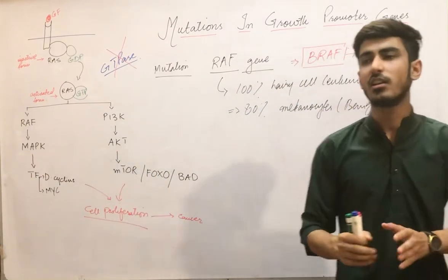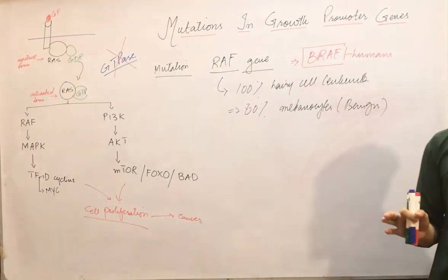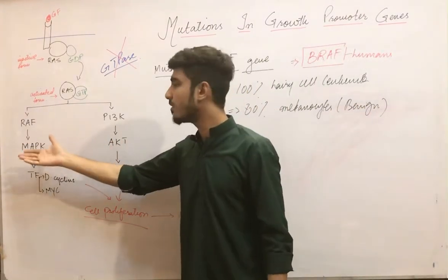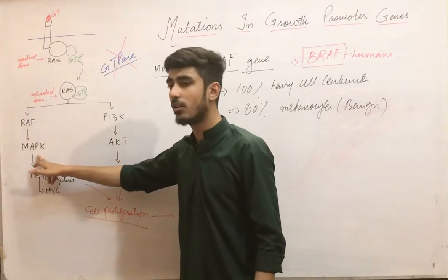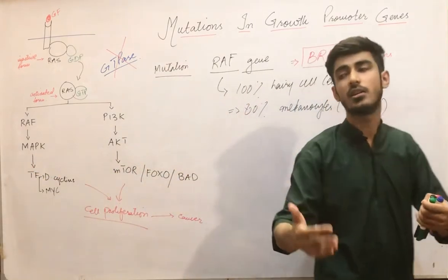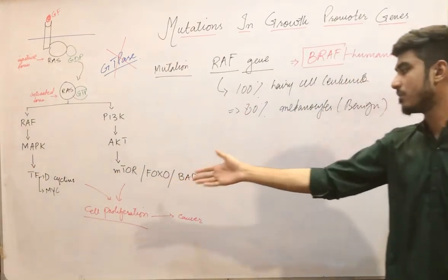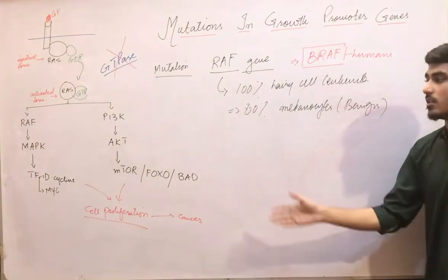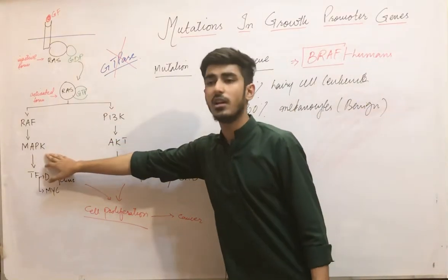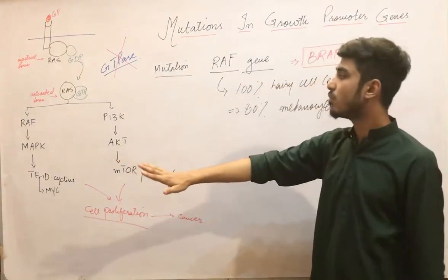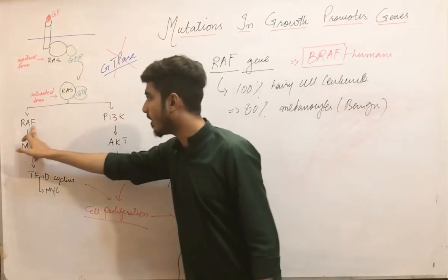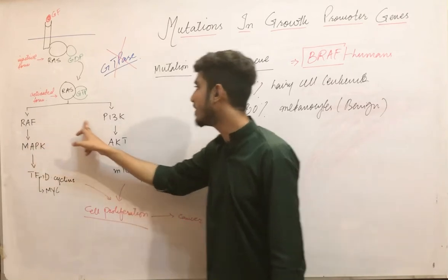The MAPK genes are less commonly mutated, so we are less concerned with them. But simply, if there is a gain-of-function mutation in these genes, the downstream pathway will be more activated, over-proliferation will occur, and cancer develops — the same mechanism as for RAF. Now moving on to mutations in PI3K, the second pathway activated by RAS.